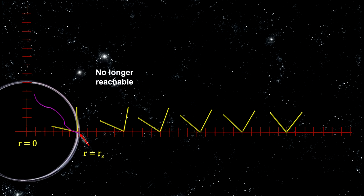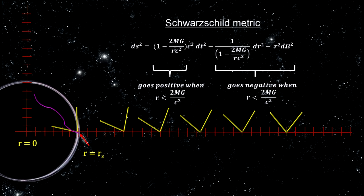This means that all events beyond the horizon are no longer in the future light cone for any object that has gone past it. No possible world line gets you out. All remaining world lines lead to the singularity.